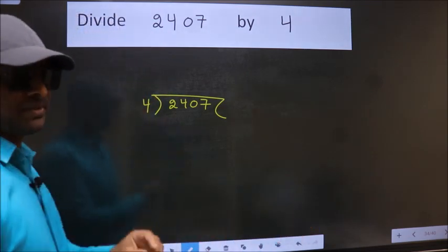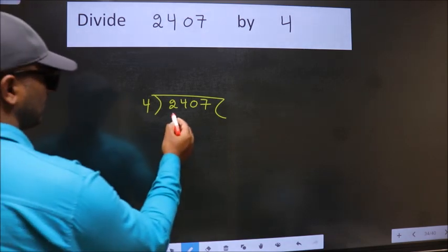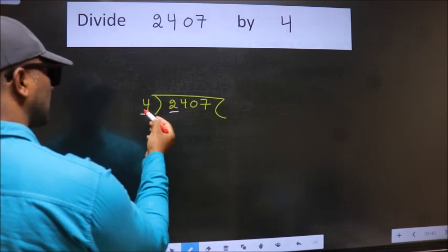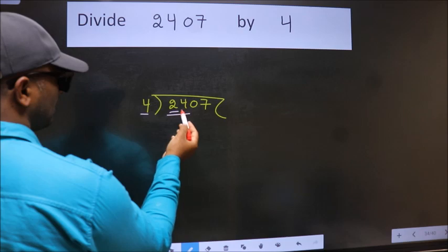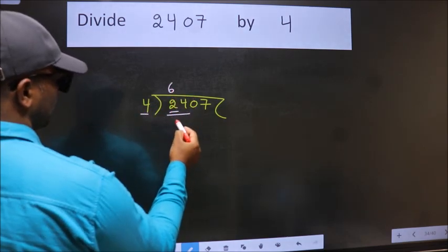This is your step 1. Next, here we have 2, here 4. 2 is smaller than 4, so we should take 2 numbers: 24. When do we get 24 in 4 table? 4 times 6 equals 24.